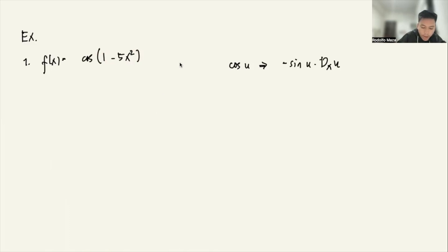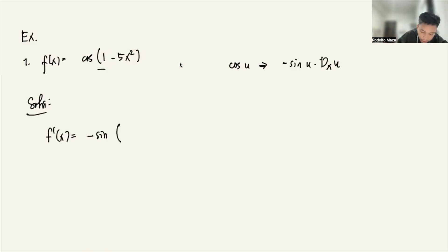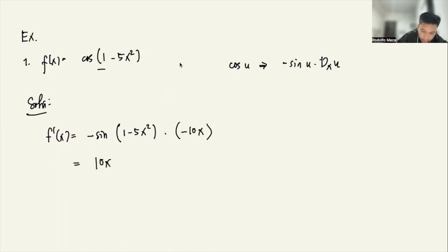So how do we do that? f prime of x equals the derivative, which is negative sine of (1 minus 5x squared), times the derivative of the inside, which is negative 10x. Therefore, your answer is 10x sine of (1 minus 5x squared).